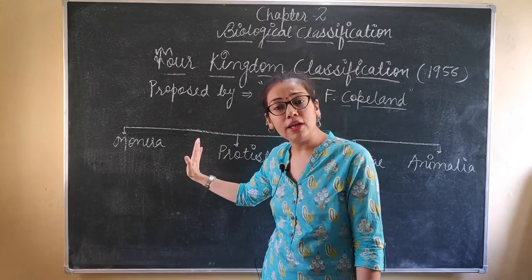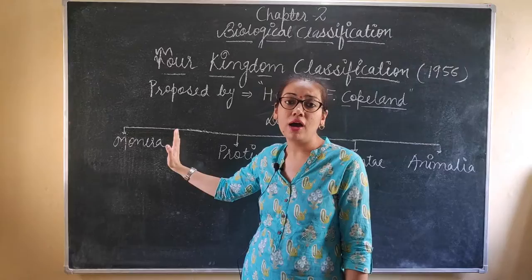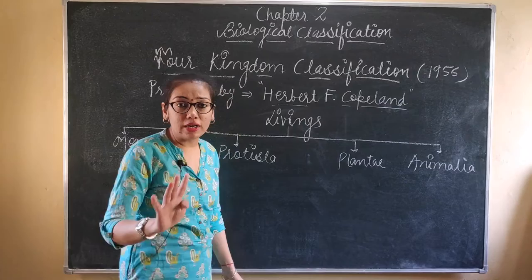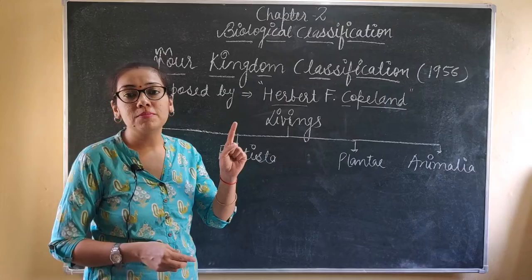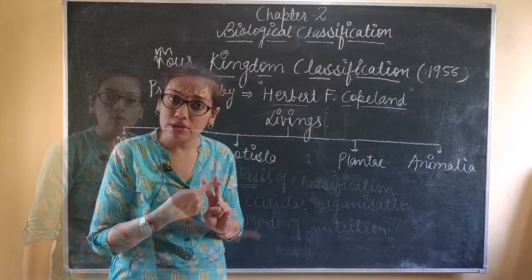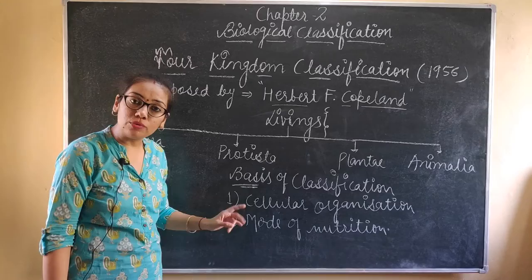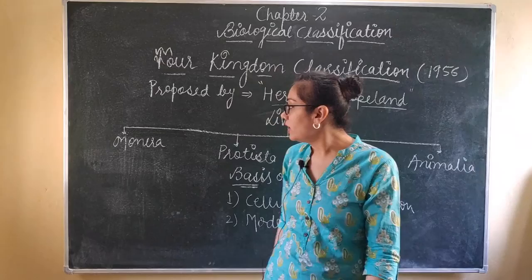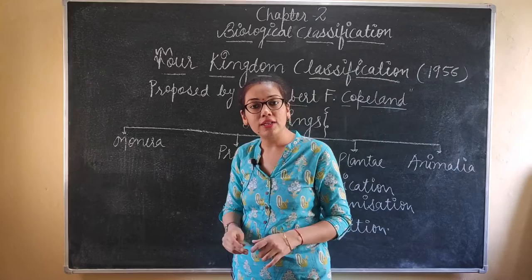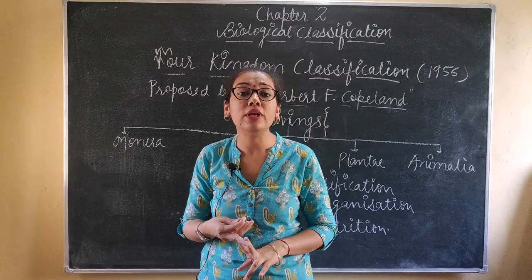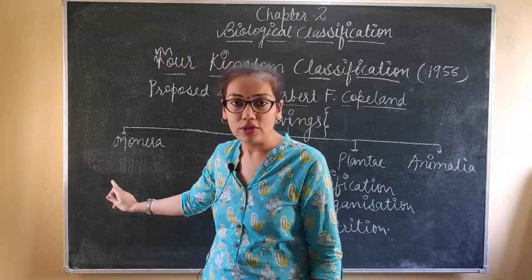Copeland put bacteria in a different group based on cellular organization and named that kingdom Monera. So the four kingdoms are: Monera, Protista, Plantae, and Animalia. The four-kingdom classification was based on two criteria: first, cellular organization, and second, mode of nutrition. In Monera, they included bacteria, archaea, and primitive algae or cyanobacteria.